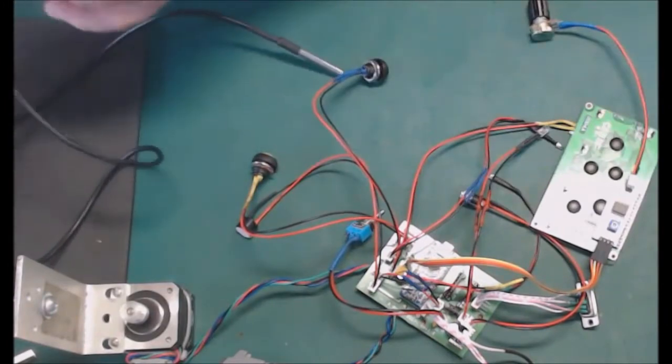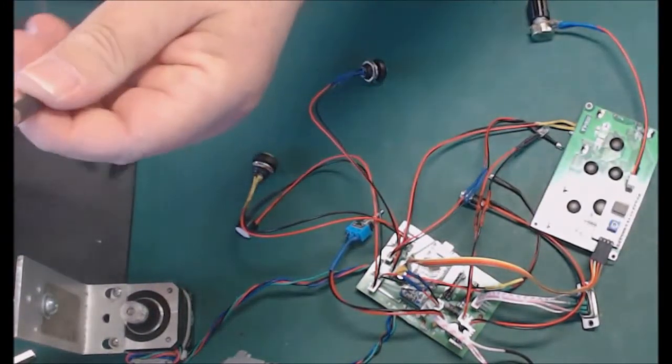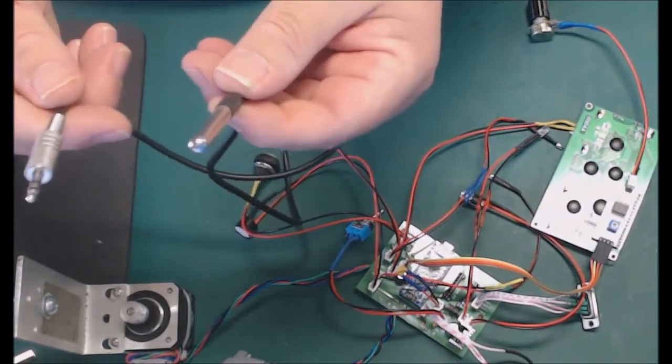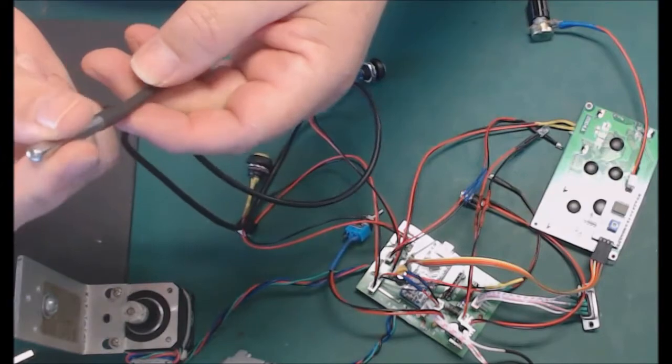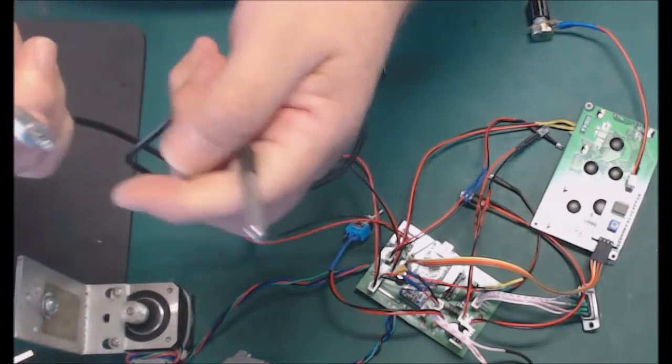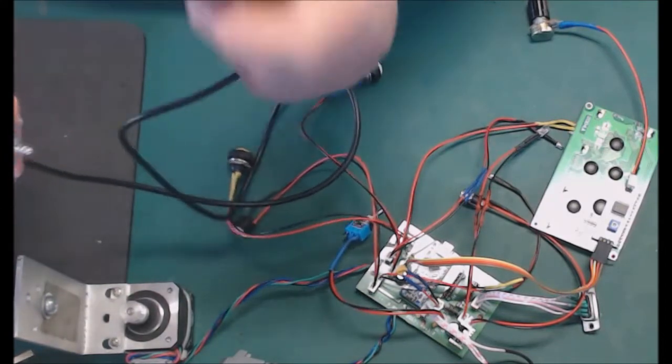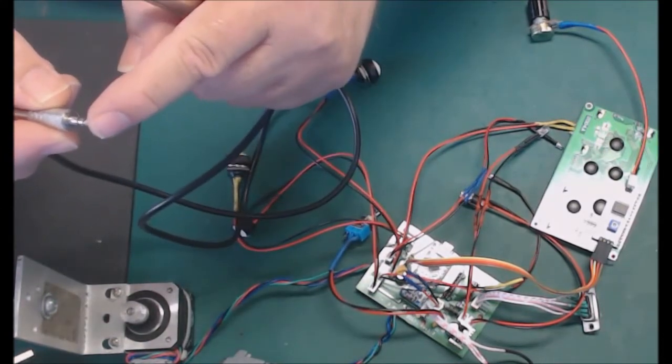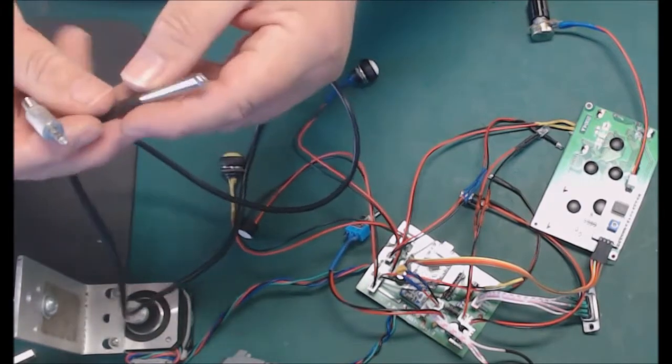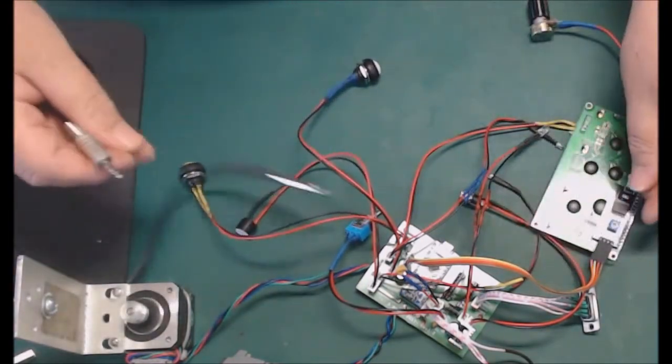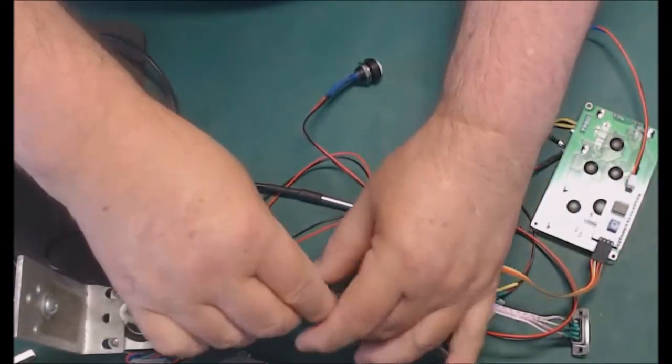I've got the temperature probe, this is the DS18B20. So this will go on the telescope tube. This is the 3-pin header: tip, ring in the middle, sleeve. So the wiring was yellow, red, black, and that will plug into the 3-pin jack on the focuser like that.